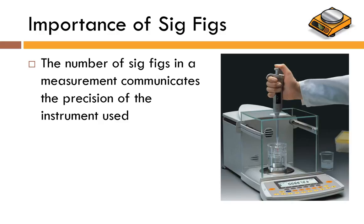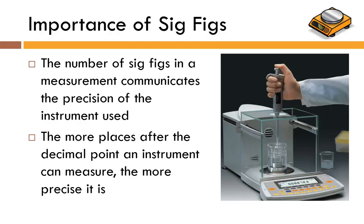The importance of significant figures is that they help us communicate the precision of the instrument used. The more decimal places after the decimal point, the more precise an instrument is. The picture shown is an analytical balance that measures out to the hundred-thousandths place — an extremely precise, very sensitive piece of instrumentation and, as a result, also very expensive.